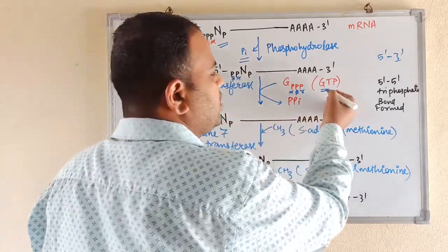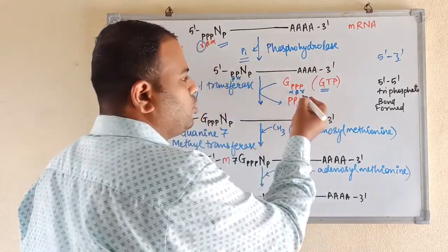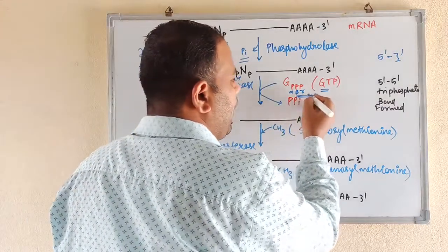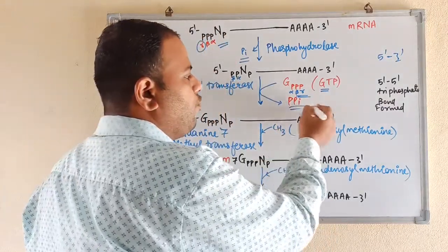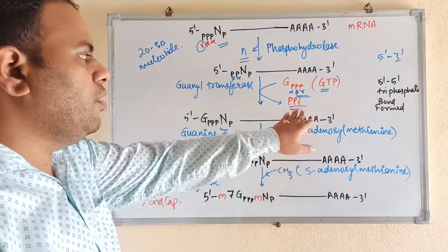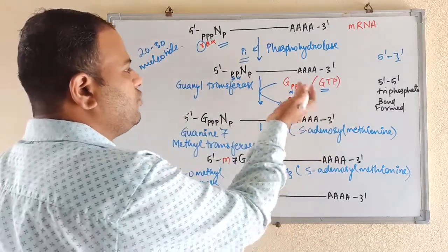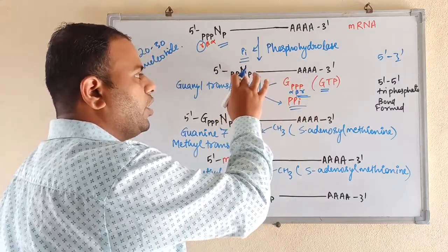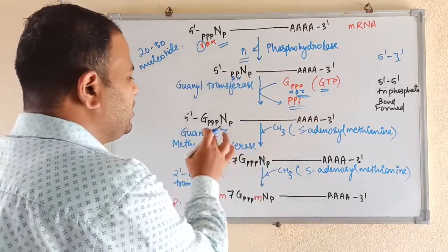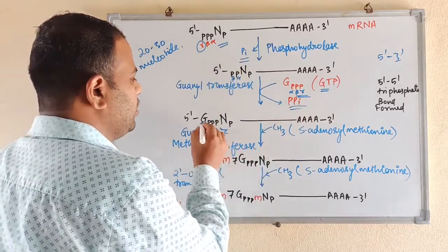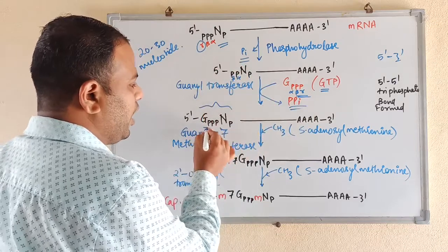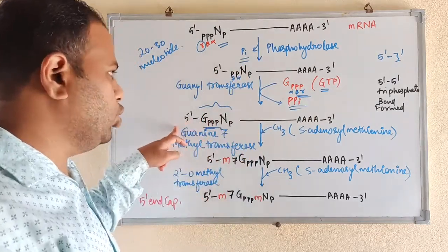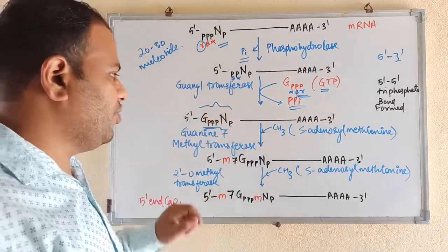GTP also has three phosphorus groups — alpha, beta, and gamma. The beta and gamma phosphorus from GTP is removed in pyrophosphate form. Now this alpha phosphorus along with the alpha and beta present from the previous starting nucleotide at the 5 prime end attaches at this position. The guanyl residue attaches at this starting position, done by the enzyme guanyl transferase, and this is the 5 prime cap that is synthesized.